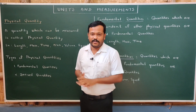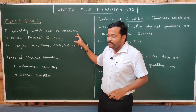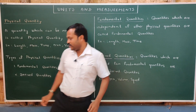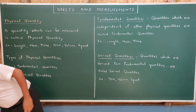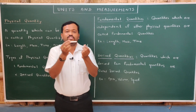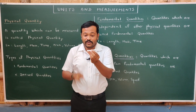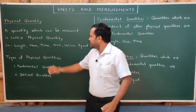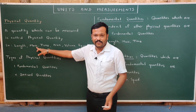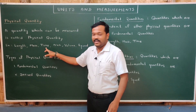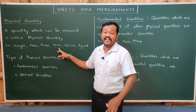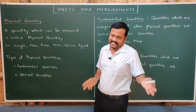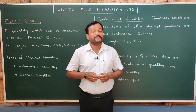So in daily life we find many quantities that can or cannot be measured. A quantity which can be measured is called a physical quantity. For example: length — the length of a chalk can be measured with a scale. Mass, time, area of a playground, volume of milk, and speed of a bike are all quantities that can be measured, so they are physical quantities.